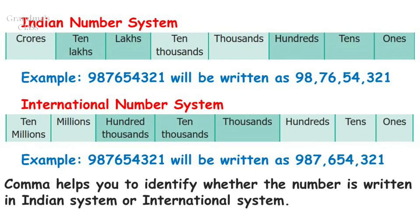Before we go into the exercise, let us see a little bit about the number system. The Indian number system consists of 1s, 10s, 100s, 1000s, 10,000s, lakhs, 10 lakhs, crores and further.